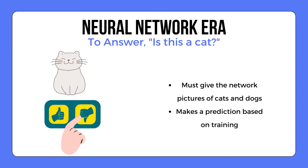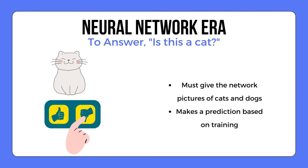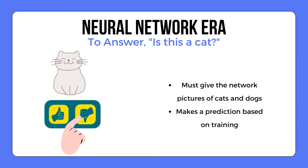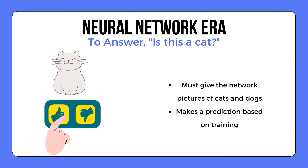In the wave of neural networks, we could show the network images of cats and dogs, then ask: is this a cat? The network would likely respond with a prediction — it is a cat. Neural networks allow for more nuanced decision-making by training on examples, which is an evolution from hard-coding rules.